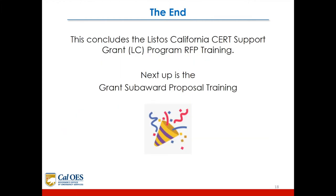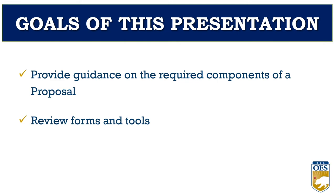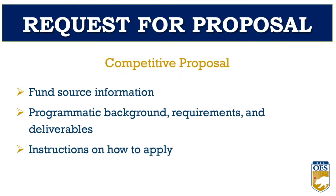This concludes the California CERT Support Grant LC Program RFP training. Next up is the grant subaward proposal training administered by William Chan, one of our program specialists in the Listos unit. Today we are going to provide guidance on the components required in your proposal, review the forms referenced earlier, and familiarize you with some available tools. Submitting a proposal begins with a request for proposal being released — this is our competitive process. Within the RFP you will find fund source information, the background of the program, requirements, expected deliverables, and instructions on how to apply.